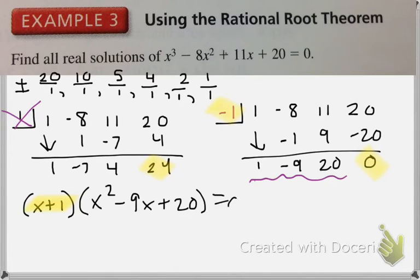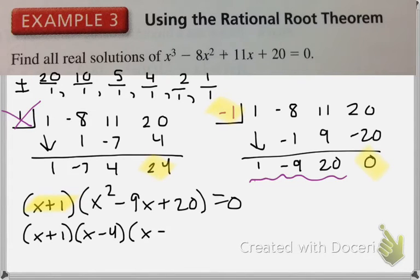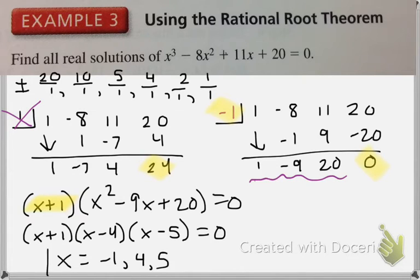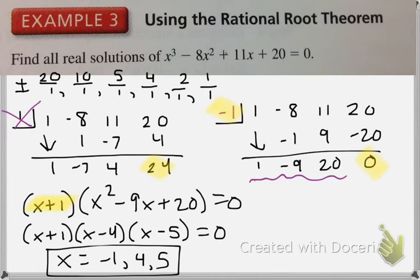From here I can factor that using magic x. And I am able to find all three of my zeros. So the rational root theorem just gives you a place to start, and once you have found one of your zeros, oftentimes you will be able to factor the rest using one of our previously mentioned techniques.